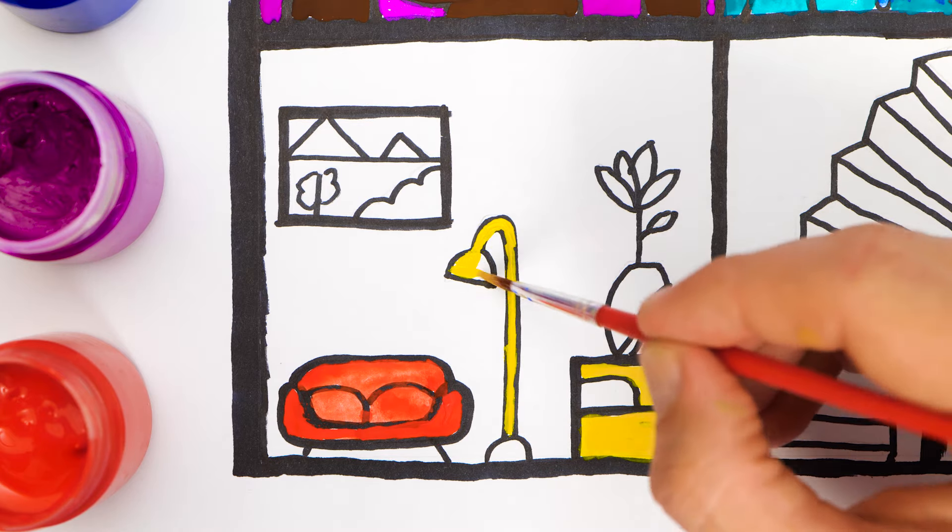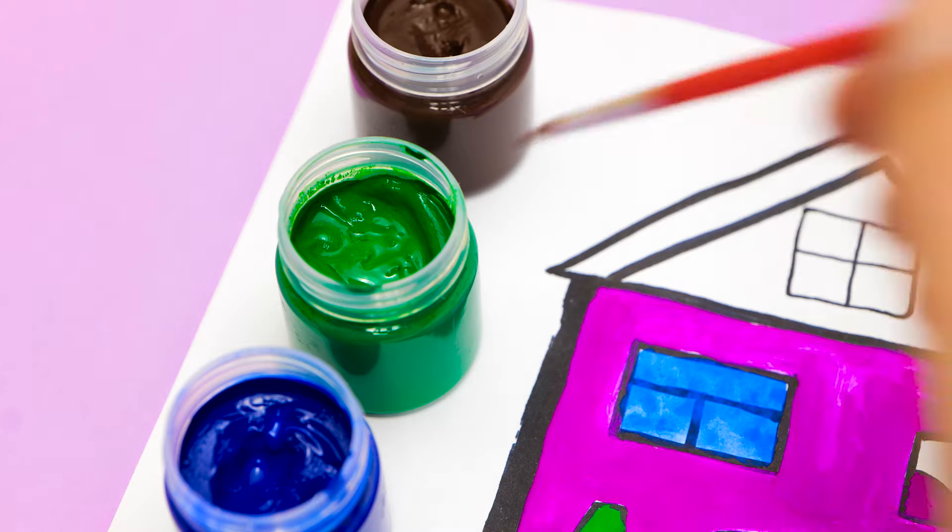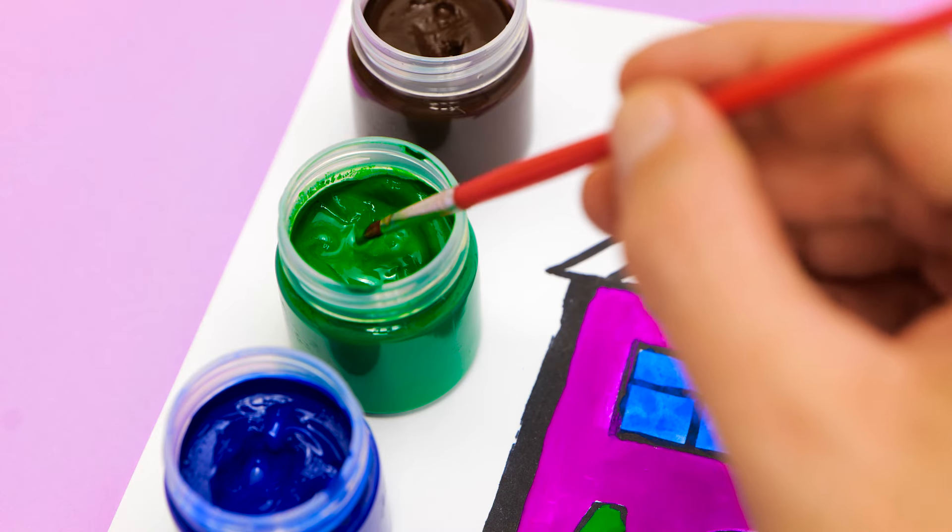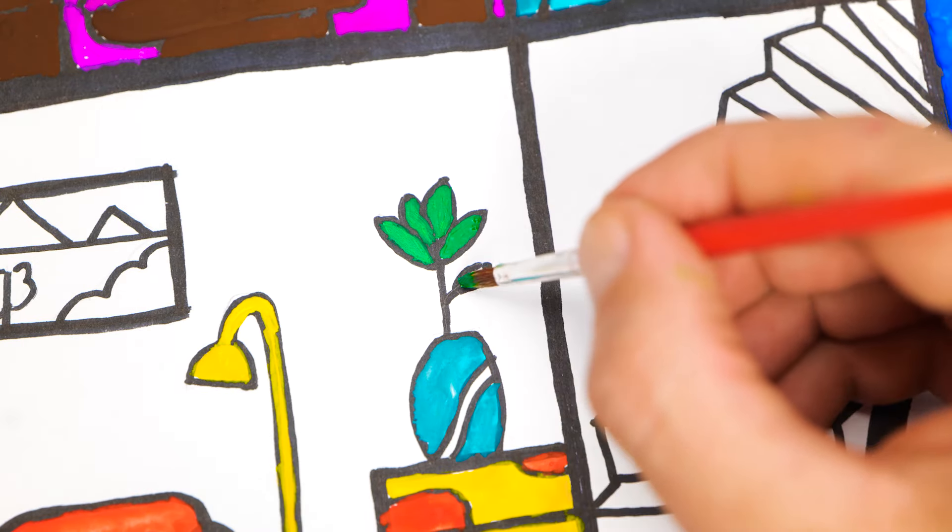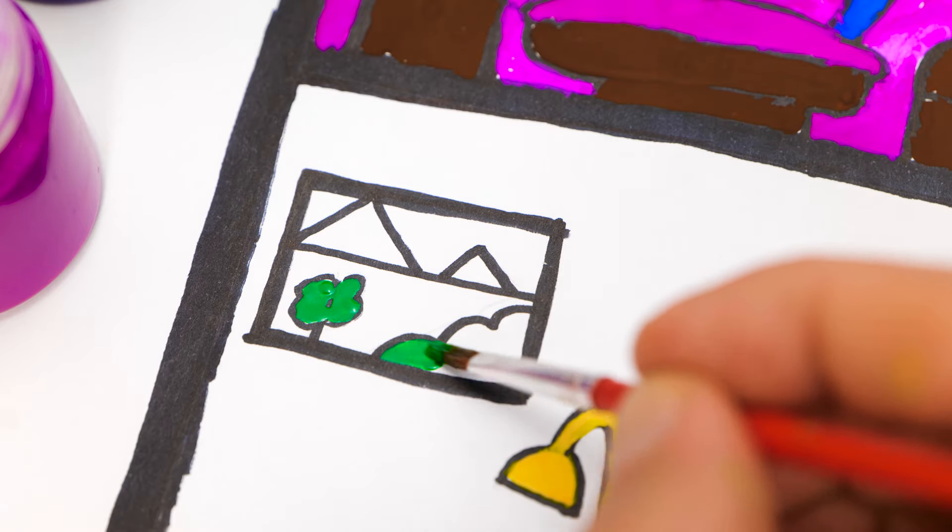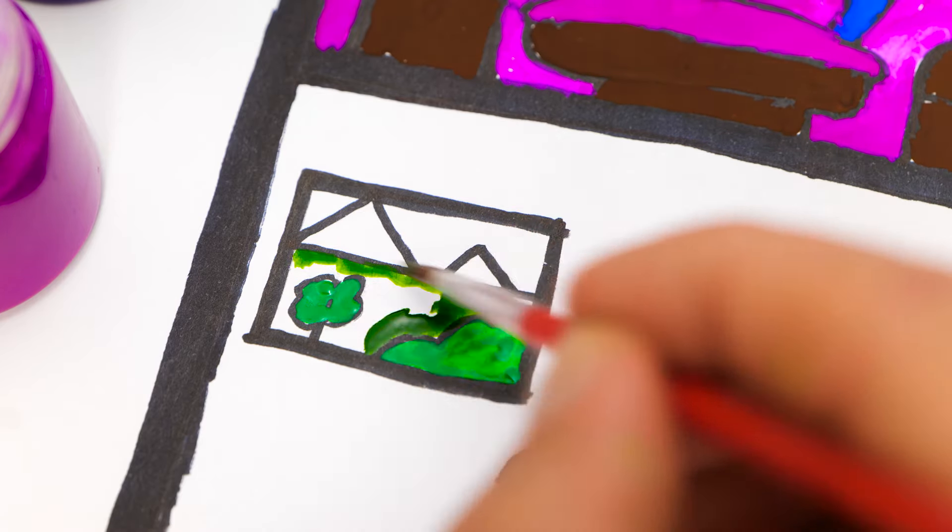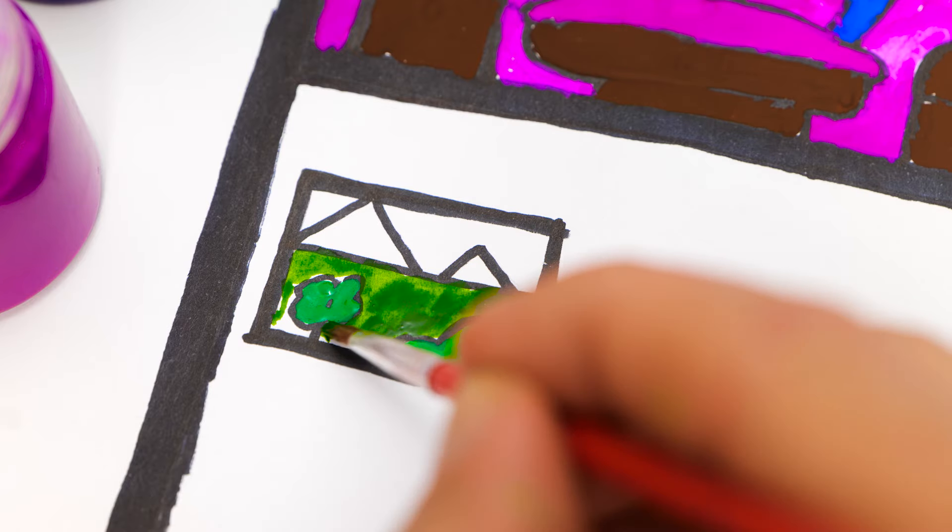Here comes some yellow. And a bit of turquoise. Oh, I nearly forgot about green. The plant should be green. Friends, do you like drawing and coloring with us? Then subscribe to our channel. There's a lot of fun videos for you there.